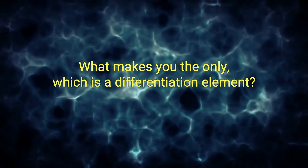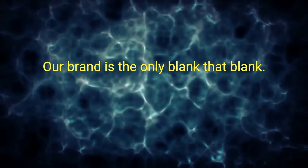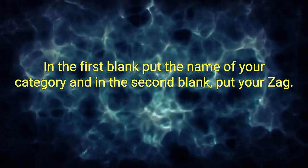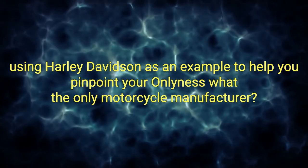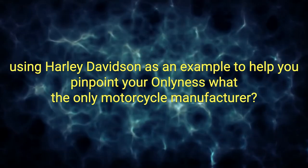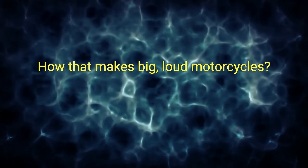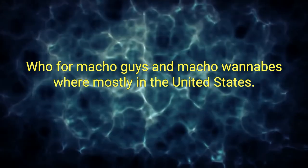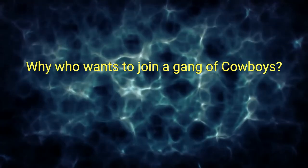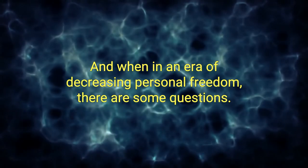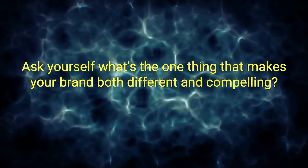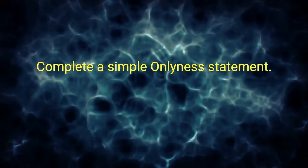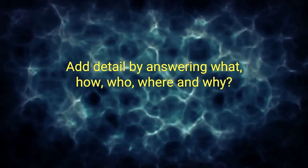Step number six, what makes you the only, which is a differentiation element. Our brand is the only blank that blank. In the first blank, put the name of your category, and in the second blank, put your zag. Here's a more detailed version of the exercise using Harley Davidson as an example to help you pinpoint your onlyness. What? The only motorcycle manufacturer. How? That makes big, loud motorcycles. Who? For macho guys and macho wannabes. Where? Mostly in the United States. Why? Who want to join a gang of cowboys and when? In an era of decreasing personal freedom. Here's some questions to ask yourself: What's the one thing that makes your brand both different and compelling? And here are some action steps to take: Complete a simple onlyness statement. Add detail by answering what, how, who, where, and why.